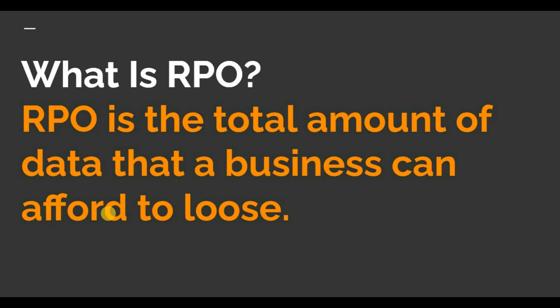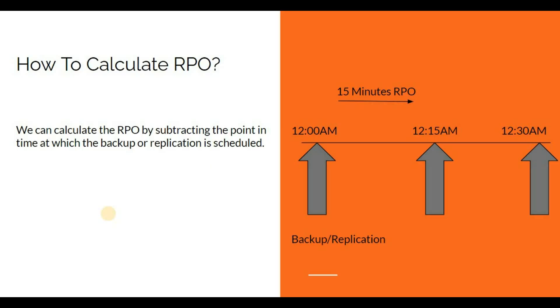RPO is the total amount of data that a business can afford to lose. By definition, we can calculate the RPO by subtracting the point in time at which the backup or application is scheduled. On the right-hand side I have made a simple diagram — suppose a backup or application happens at 12:00 AM, 12:15 AM, and 12:30 AM.